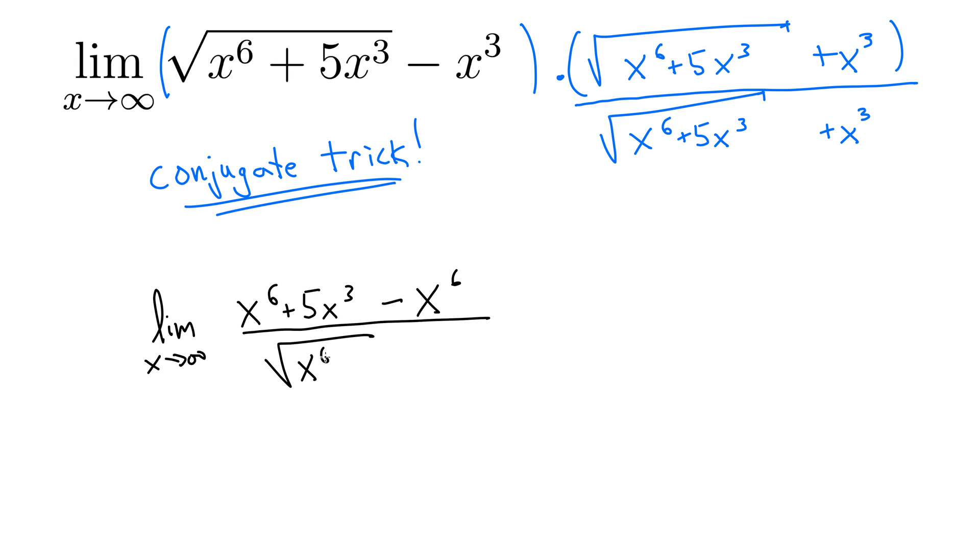Well, now we have something down here. x to the 6 plus 5x cubed, all in the square root, plus x cubed outside of the square root. Oh, and look here, the x to the 6th is canceled out, so that's kind of nice, leaving us with just 5x cubed on the top.